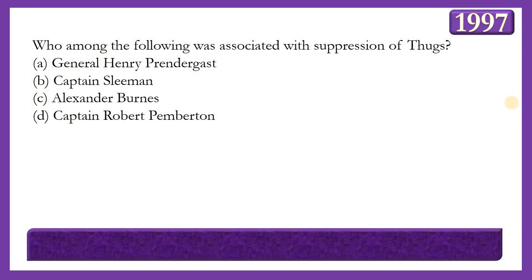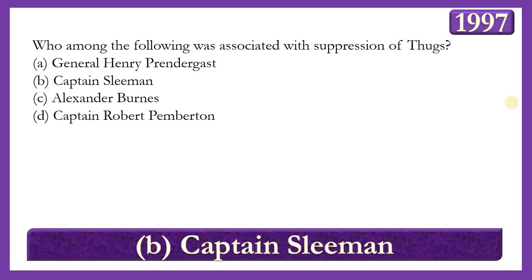Next question: Who among the following was associated with the suppression of Thugs? Options: General Henry Prendergast, Captain Sleeman, Alexander Burnes, or Captain Robert Pemberton. The answer is option B — Captain Sleeman — whose full name was Sir William Henry Sleeman, best known for suppressing the Thugs across the country. In 1835 he captured Syed Amir Ali and many other notorious leaders who were generally known as Thugs.